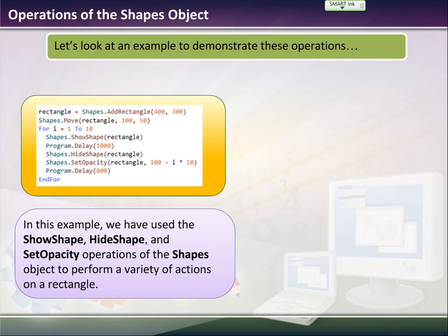The program says rectangle equals, so that's a variable. Then we use the shape object and put add rectangle 400, 300. I'll explain those coordinates a little bit later. What we're doing is we're defining a shape that is a rectangle, and then that shape is equal to the shape operation add rectangle. Then we could use shapes.move to move the rectangle to a new coordinate system, 100, 50.